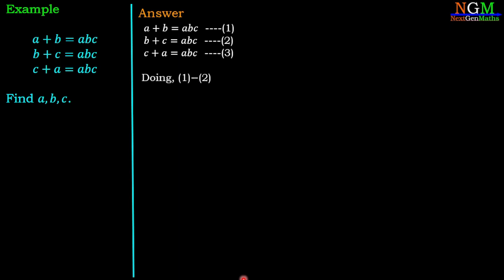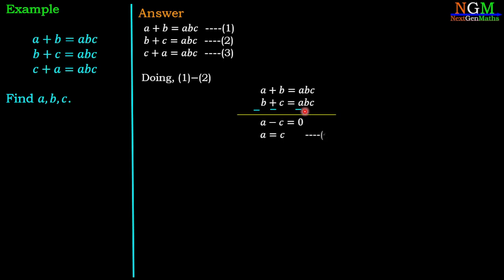In the first step we take the subtraction of equation 1 and equation 2. Then we have (A plus B) minus (B plus C) equals ABC minus ABC. The plus B cancels with minus B, and ABC cancels with minus ABC, giving us A minus C equals 0. Therefore A equals C — equation 4.